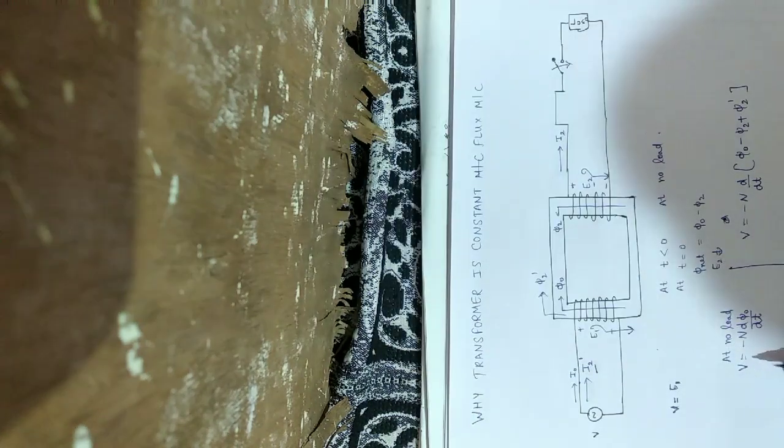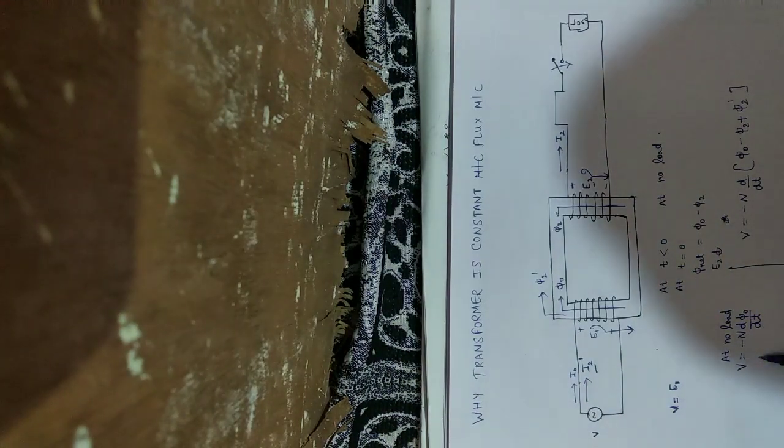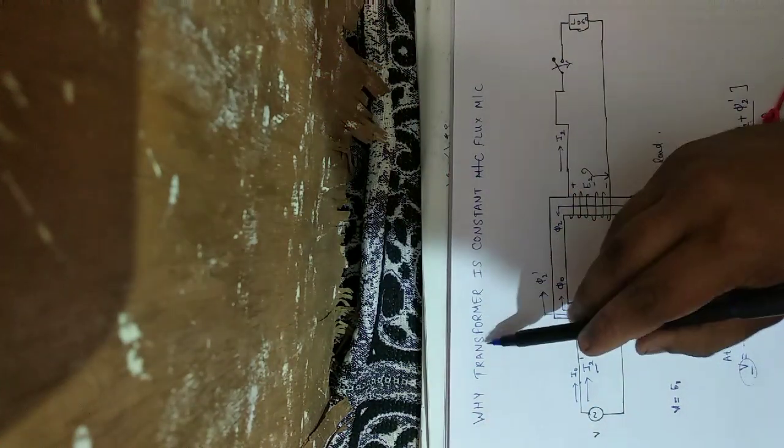For v to remain the same at both conditions, this should be zero, so phi2 equals phi2 dash. So the flux remains the same for voltage to remain the same at both conditions. That's why a transformer is a constant flux machine. Thank you.